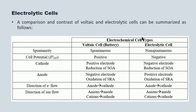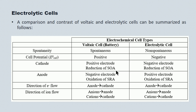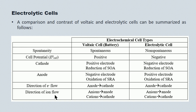A comparison and contrast between the voltaic and electrolytic cells: in terms of spontaneity, voltaic cells are spontaneous while electrolytic cells are non-spontaneous. The cell potential for a voltaic cell is positive, and for an electrolytic cell it's negative. The cathode is the positive electrode for the voltaic cell and is the site of reduction of the strongest oxidizing agent. In the electrolytic cell it's relabeled the negative electrode, but it continues to be the site of reduction. The anode in the voltaic cell is the negative electrode and site of oxidation for the strongest reducing agent; it's relabeled the positive electrode in the electrolytic cell. Direction of electron flow is anode to cathode in both instances. Anions flow to the anode and cations flow to the cathode.